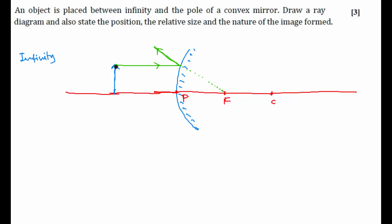Now the second ray I am considering is a ray which is incident at pole. After reflection how will it go? It will go in such a way that this angle should be equal to this angle. So principal axis will act as normal in this case. So this is my first ray and this is my second ray.